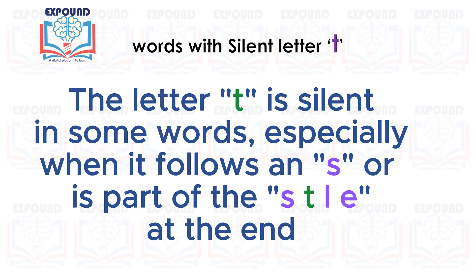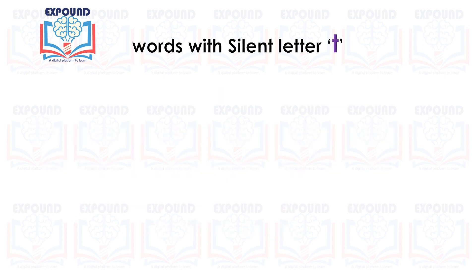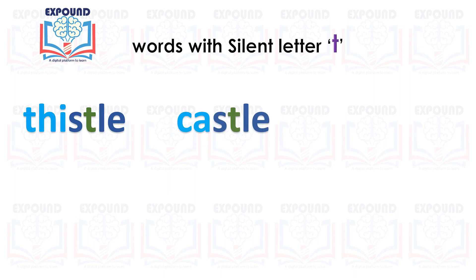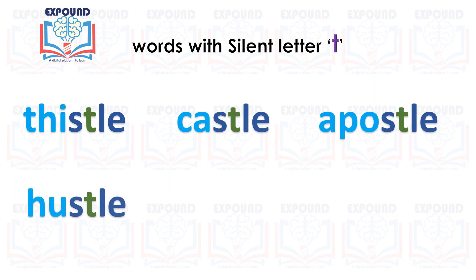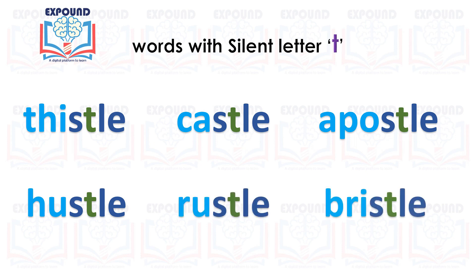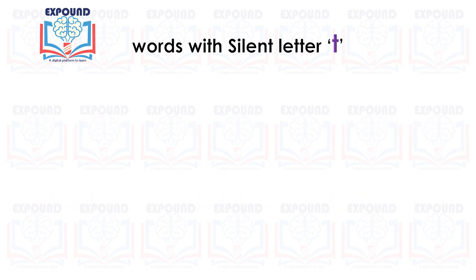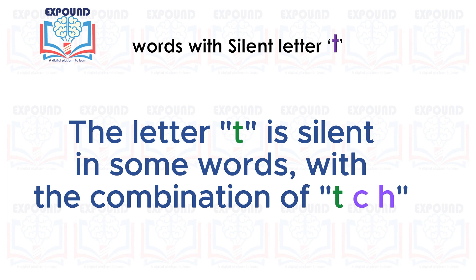Rule 2: The letter T is silent in some words especially when it follows an S, or as part of the S-T-L-E pattern at the end. Examples: thistle, castle, apostle, hustle, rustle, bristle.